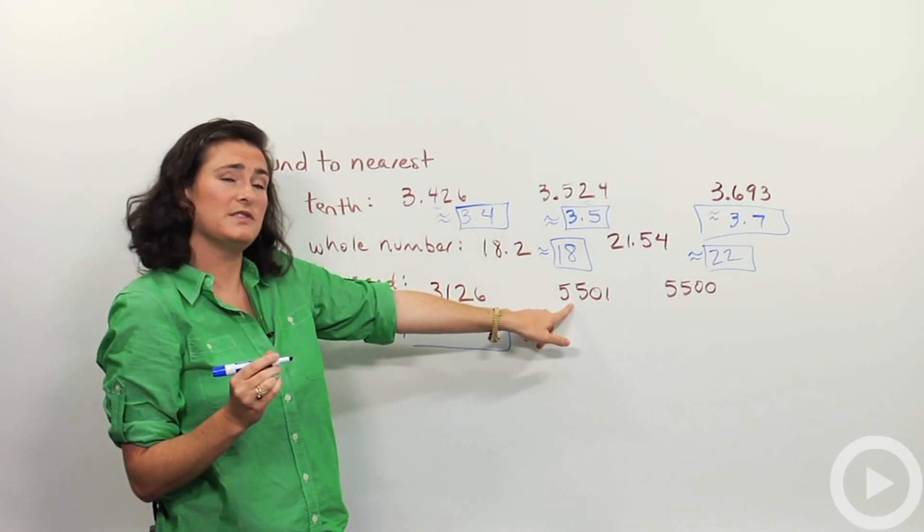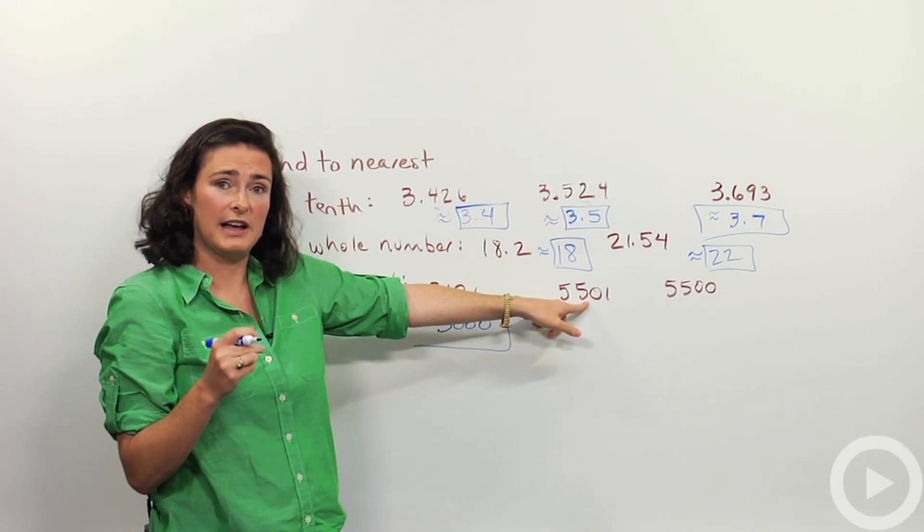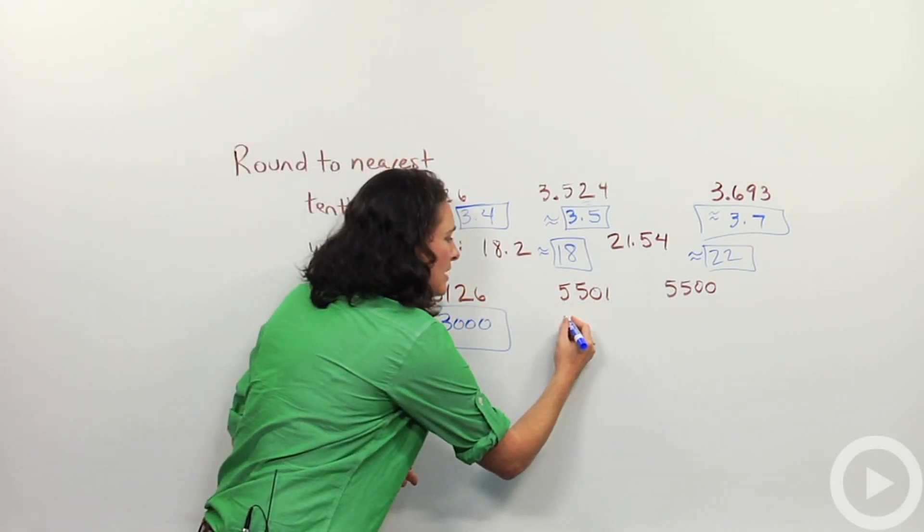Here, five thousand, maybe six. Let's see. The number next to it is a five. So following that rule, I'm going to round up to six thousand.